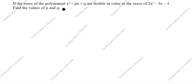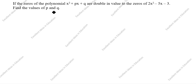If the zeros of the polynomial x squared plus px plus q are doubled in value to the zeros of 2x squared minus 5x minus 3, find the values of p and q. We need to find the p and q values.